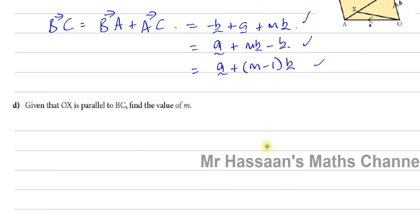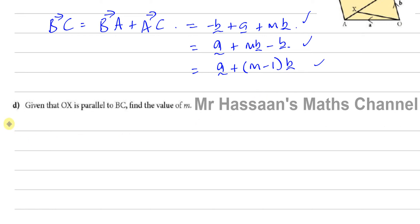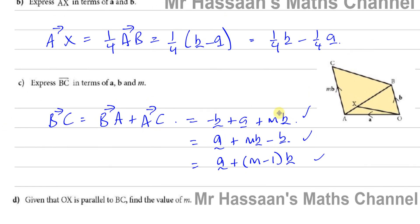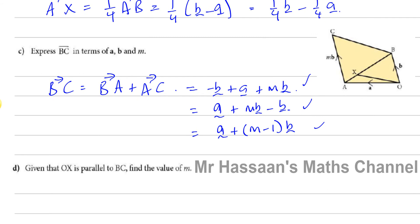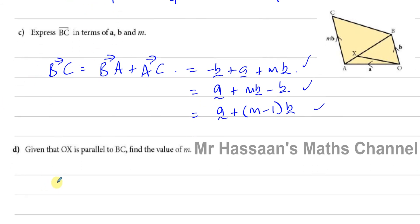Now part D says: given that OX is parallel to BC, find the value of M. If two vectors are parallel, they can be expressed as multiples of each other. So OX equals some constant K times BC. We need to express both OX and BC in terms of a and b, then equate them to find M.